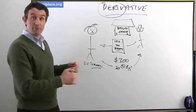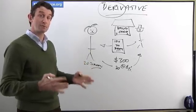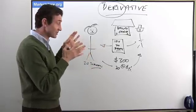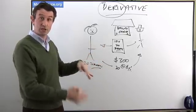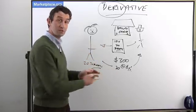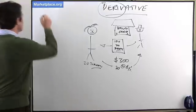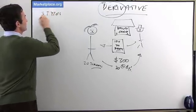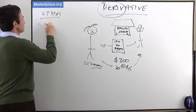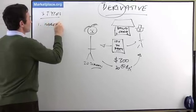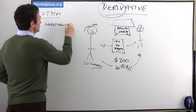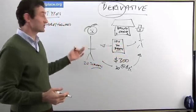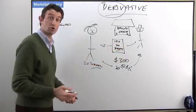This is the first of three types of derivatives, but it basically shows you what a derivative is. A derivative is essentially a contract — it's based on something else, an agreement based on something else. In this case, turkeys. This is the first type, which is the future or forward. Because in the future, Mr. Bailey will be delivering 20 turkeys to Terry. Hence it's a future or a forward contract.